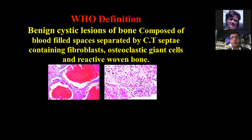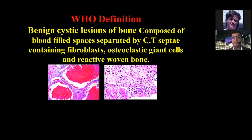According to the WHO definition, it's a benign cystic tumor of bone composed of blood-filled spaces separated by septa containing fibroblasts, osteoclasts, giant cells, and reactive woven bone. So we're talking about a neoplasm and not a cyst.